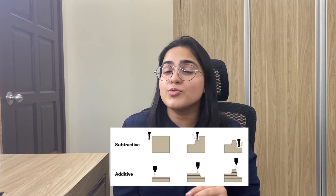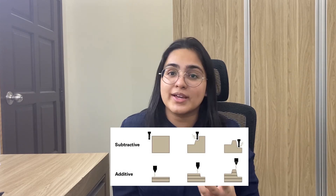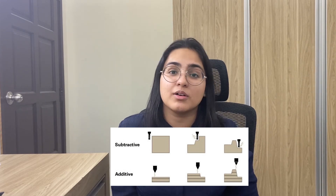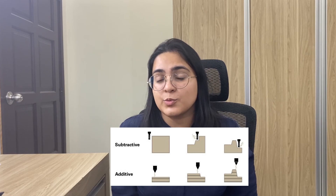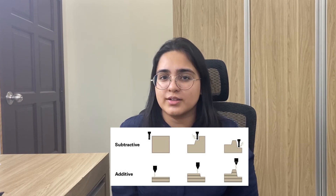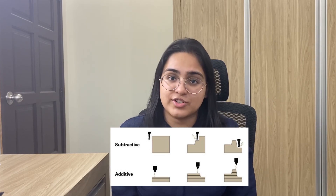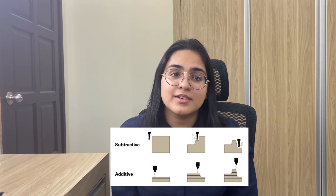We also have subtractive processes, where one would remove or cut away material to obtain your desired object, rather than adding, which is what we would do in additive manufacturing. Some examples of subtractive manufacturing are milling and turning, which are typically done with a CNC machine.